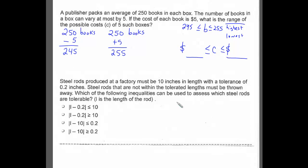But I want to know the cost of those range of books. If each book costs $5, then all we need to do is multiply the number of books by 5. So the lowest possible value that the box would cost would be $1,225.